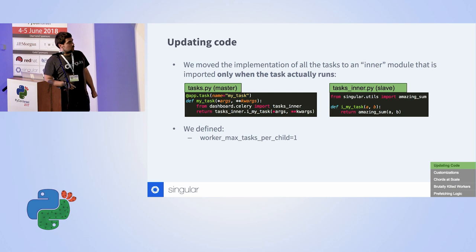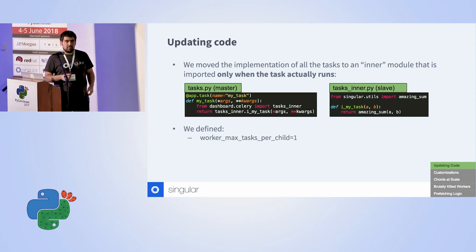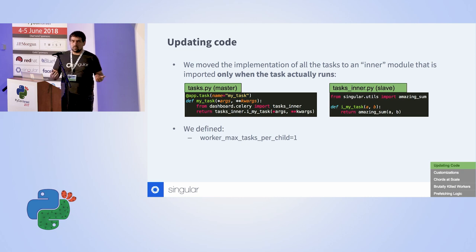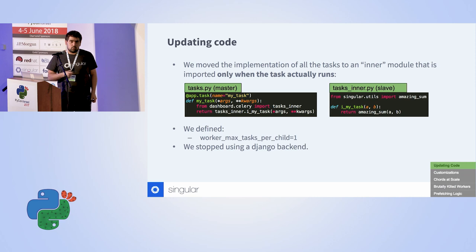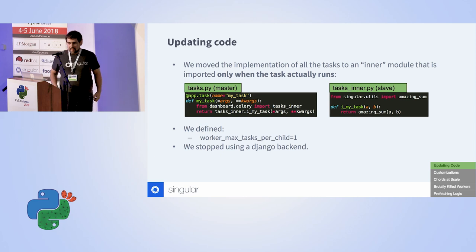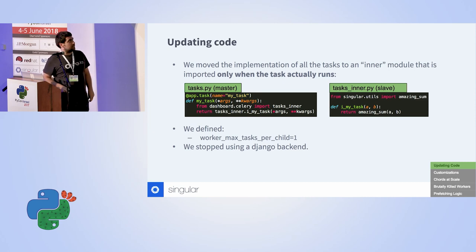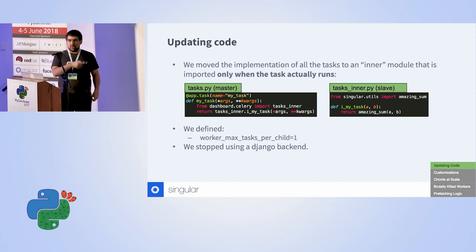In order for that to work we also had to define that each new task will be executed in a new process. This is not ideal for all use cases — if you have a lot of small tasks it might not be ideal — but in our case the tasks can take a long time so we definitely prefer to work this way. Finally, we also wanted to be able to update the Django models, so we decided to stop using a Django backend entirely. From that moment on, updating code wasn't really a concern. We added some safeties to make sure we don't import more than we intend to in the master process.